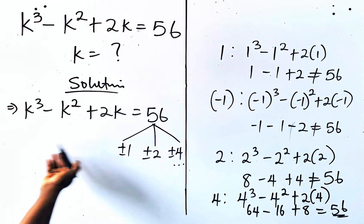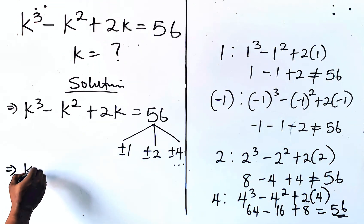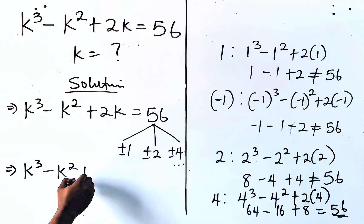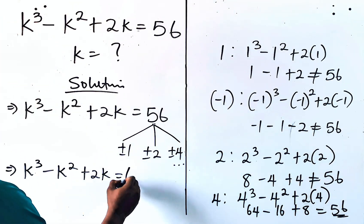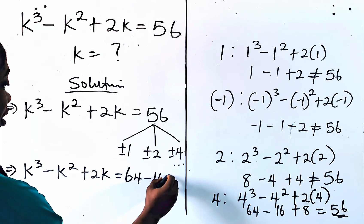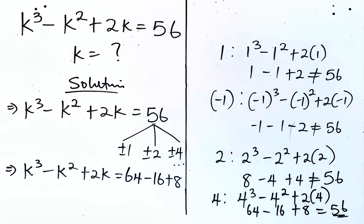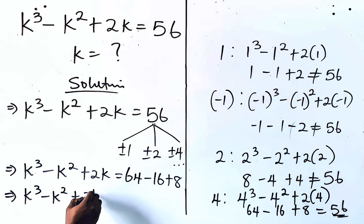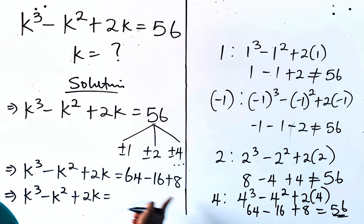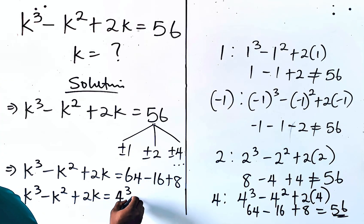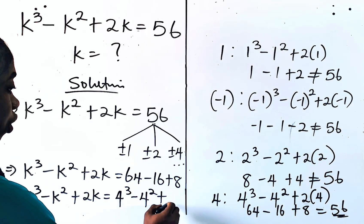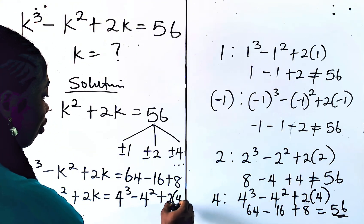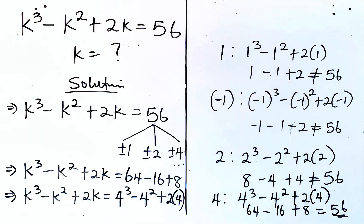Now let's do this together. We now have k cubed minus k squared plus 2k. Instead of writing 56, I'm going to replace it with 64 minus 16 plus 8. So if you keep simplifying, you have k cubed minus k squared plus 2k equals 64, as you have seen: it's 4 cubed minus 16 which is 4 squared, then plus 2 multiplied by 4.